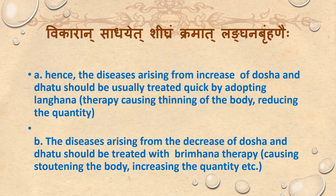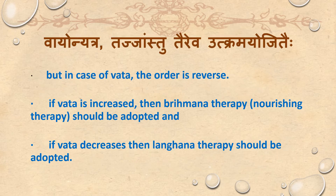If the disease arises from increase of Doshas and Dhatu, it should be treated quickly by adopting Langhana therapy, causing thinning of the body and reducing the quantity. Disease arising from the decrease of Doshas and Dhatu should be treated with Brimhana therapy, causing stoutening of the body and increasing the quantity.